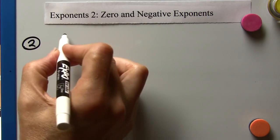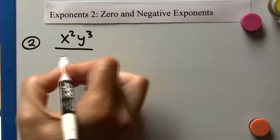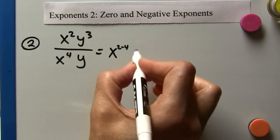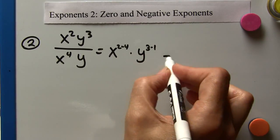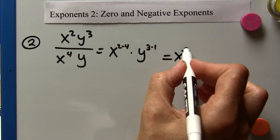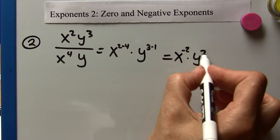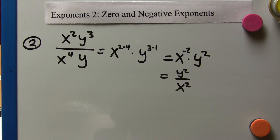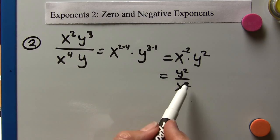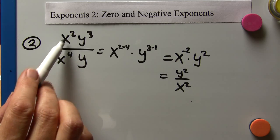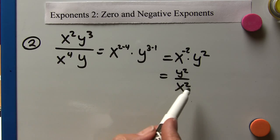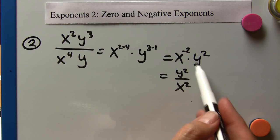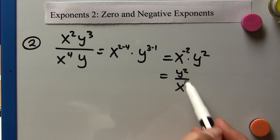Another example: x squared y cubed over x to the fourth y. We can write this as x to the two minus four times y to the three minus one. Two minus four is negative two, so that's x to the negative two times y squared, which we can write as y squared over x squared. We could also get there directly: subtract the exponents, larger one wins — x squared in denominator, y squared in numerator. With negative exponents it would be x to the negative two times y squared.